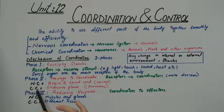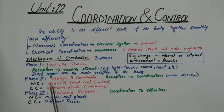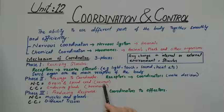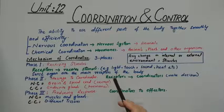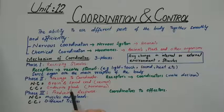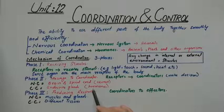In nervous coordination — abbreviated NC — the brain and spinal cord are the coordinators. They receive and send messages through neurons in the form of electrical signals. In chemical coordination — abbreviated CC — specialized glands called endocrine glands take the role of the coordinator. They receive information and send messages by secreting hormones into the blood.